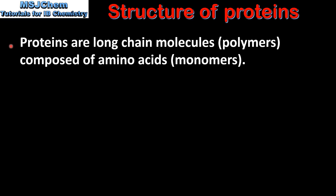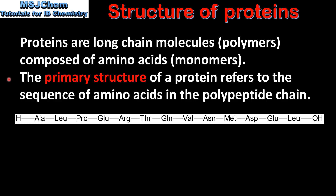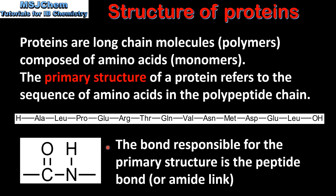Proteins are long chain molecules known as polymers composed of amino acids which are the monomers. The primary structure of a protein refers to the sequence of amino acids in the polypeptide chain. The bond responsible for the primary structure is the peptide bond or the amide link, which you can see here.